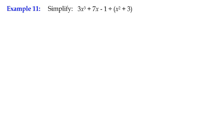If I have a look at this, it says divide 3x cubed plus 7x minus 1 by x squared plus 3. The main difference here is that if you look down the x terms, we've got an x cubed term, an x term, and a constant term, but we have no x squared term.